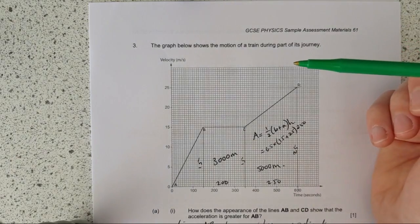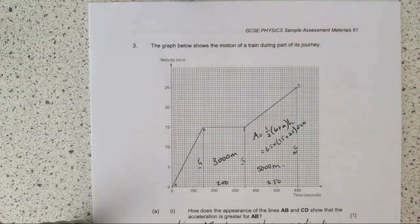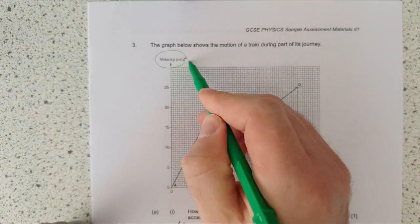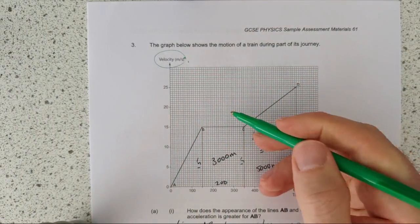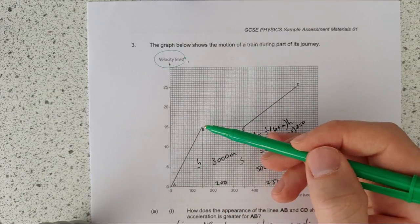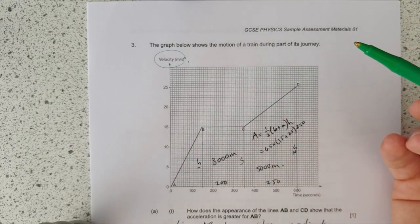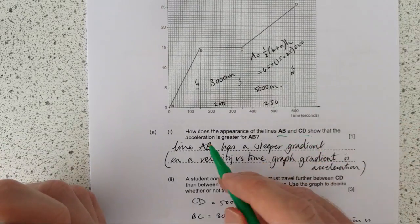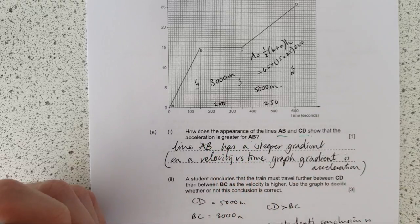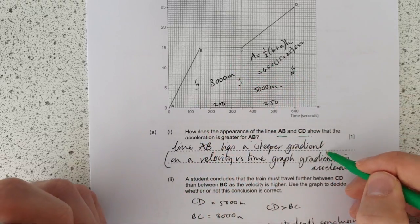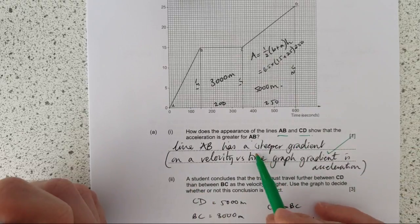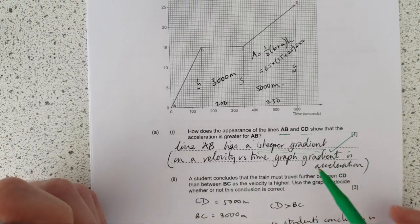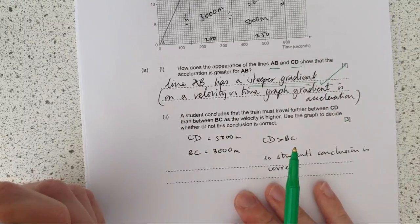Next bit. The graph shows the motion of the train during part of its journey. So here's another, this is the same kind of skill. Let's just check what type of graph we're working with here - it's a velocity time graph, so we can apply those kind of points. Gradient is acceleration, area under is a distance, horizontal is no change in speed, no acceleration. So how does the appearance of lines A to B and C to D show the acceleration is greater for A to B? Well, line A to B has a steeper gradient than C to D. On a velocity time graph, the gradient is the acceleration.